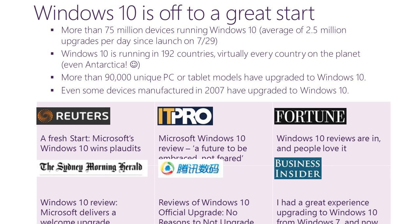Windows 10 is off to a great start. It was released on July 29th. Since then we have more than 75 million devices that have already upgraded — an average of 2.5 million upgrades per day. We have seen great uptake and interest mostly because of the familiar and productive interface, which is the best of both Windows 7 and Windows 8.1. Windows 10 is running in 192 countries — almost every country on the planet. A lot of people are using it across the world.